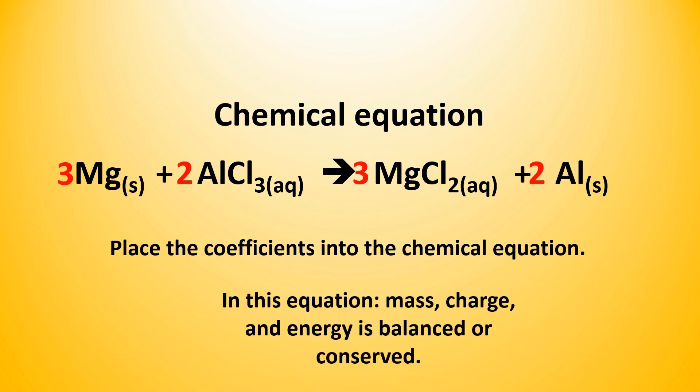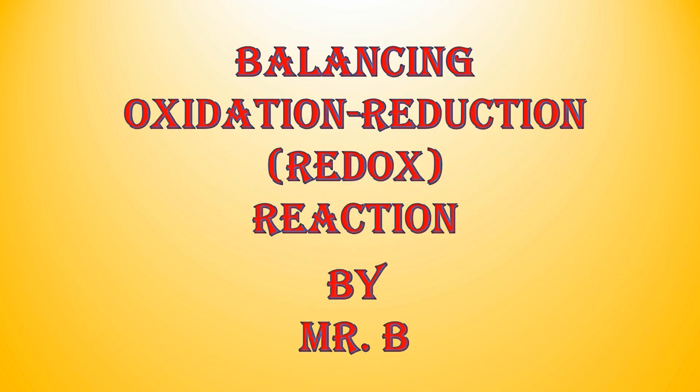Since the electrons are now balanced between half reaction 1 and half reaction 2, we may cancel the electrons and place the coefficients from the half reactions into the chemical equation, which gives a molar ratio of 3, 2, 3, 2. In this equation, mass, charge, and energy is balanced or conserved. This concludes my lesson on balancing oxidation reduction or redox reactions. I'm Mr. B.